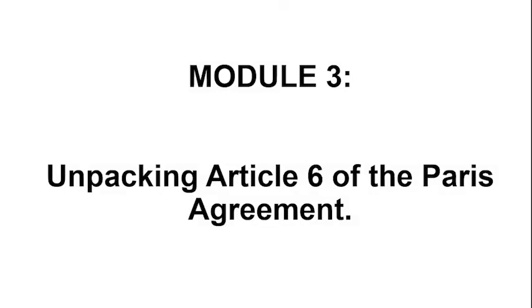Welcome back. We're into Module 3, the last of our modules, and this is the core module. We're going to break it down into two segments: one is unpacking Article 6 of the Paris Agreement, and then secondly, how to operationalize Article 6 in the African context. We need a common understanding of what Article 6 of the Paris Agreement is saying.